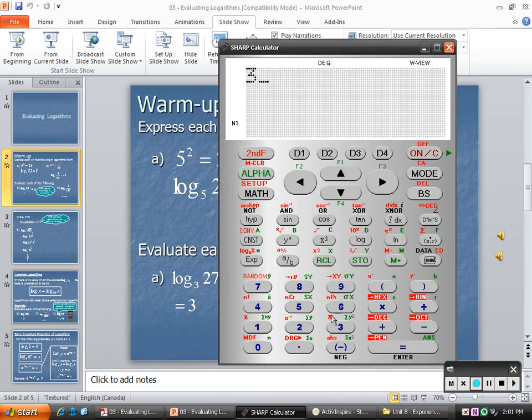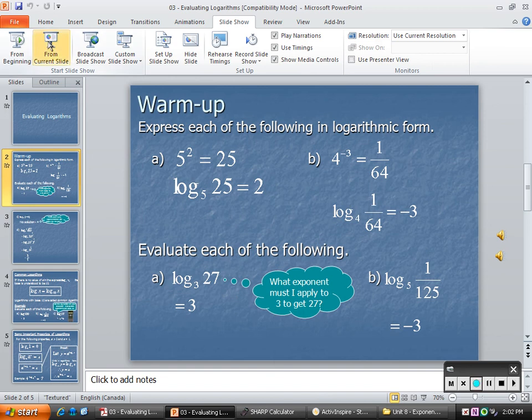So we know the answer is going to be 3. But if you didn't know it was 3, what power do I put on 3 to get 27? Well, let's say I didn't know. So I put on 3 to the power of 2. I think maybe the answer is 2. 3 to the power of 2. Answer? 9. It's not 9. Okay, so let's go one bigger. 3 to the power of 3. Equals 27.